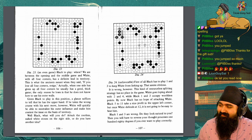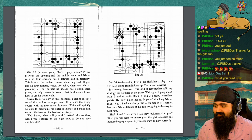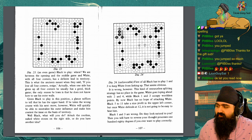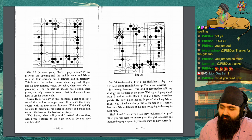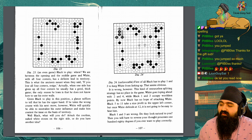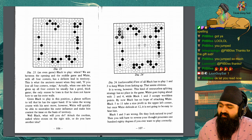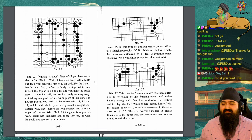Diagram 24. Unfavorable. First of all, black has to play 1 and 3 to keep white from linking up. That seems obvious. It is wrong, however. This kind of resource-less splitting strategy has no place in the game. White goes loping ahead with 2 and 4, while black 1 and 3 occupy worthless points. By now, black has no hope of attacking white. Black 5 to 11 take a nice profit in the upper left corner, but once white defends at 12, it is not going to be easy to beat him. Black 1 and 3 are wrong. Do they look natural to you? Then you will have to reverse your thought processes 180 degrees if you ever want to play correctly.